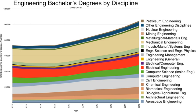Engineering education is typically accompanied by additional postgraduate examinations and supervised training as the requirements for a professional engineering license. The length of education and training to qualify as a basic professional engineer is typically 8 to 12 years, with 15 to 20 years for an engineer who takes responsibility for major projects.